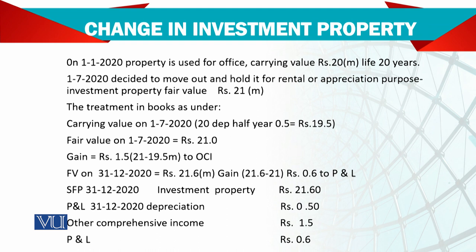First of all, you work out the carrying value on 1st July. The carrying value will be less depreciation. 20 divided by 20 is 1 million per year, and for half a year it is 0.5 million. So the carrying value is 19.5 million. Now you say the fair value is 21 million, so the increase of 1.5 million is going to be OCI — other comprehensive income.